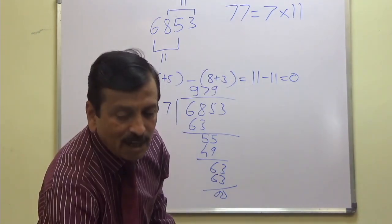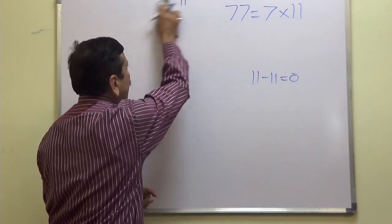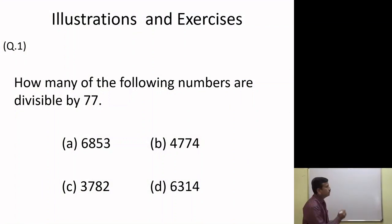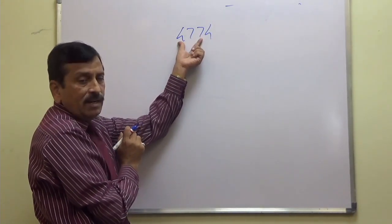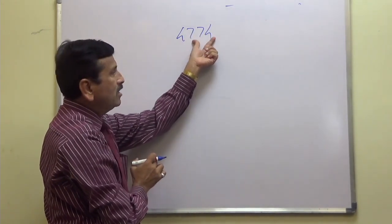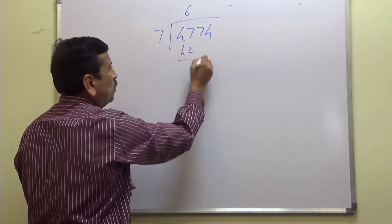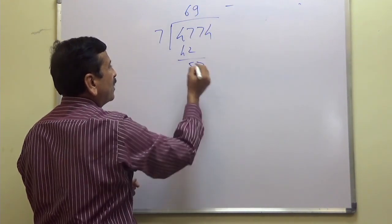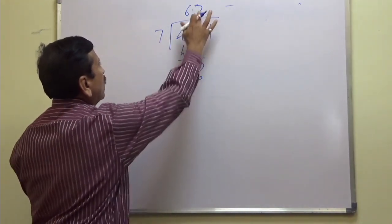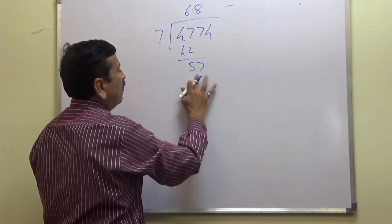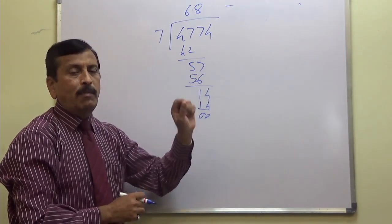Let us check the next number, 4774. For divisibility by 11: 4 plus 7 equals 11, and 4 plus 7 equals 11, so 11 minus 11 equals 0. This is divisible by 11. We check divisibility by 7 and confirm it is divisible by 7 as well. So the second number 4774 is also divisible by 77.